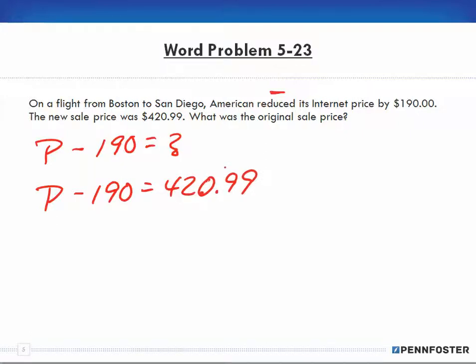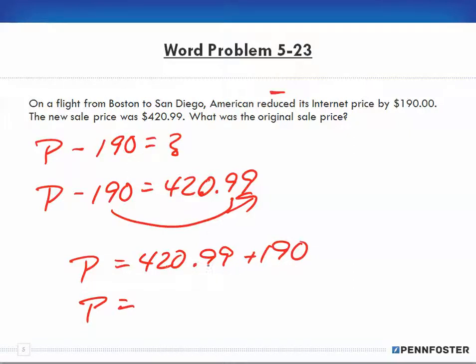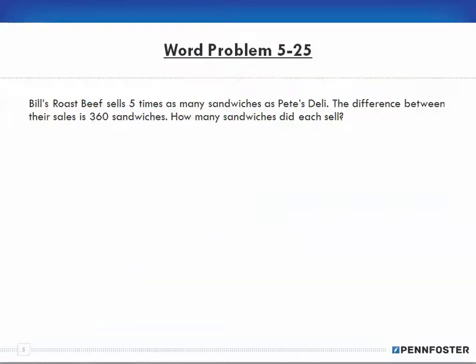What was the original sales price? We're doing simple math here. We want to isolate the P, so we take the 190 and move it to the other side of the equal sign. P equals $420.99 plus $190, so P ends up being $610.99. Simple. This problem was relatively easy - we had an original price subtracting $190 to equal our new price.